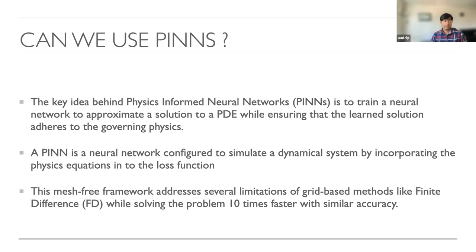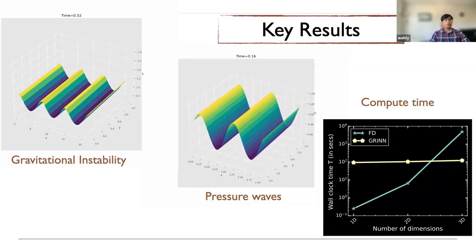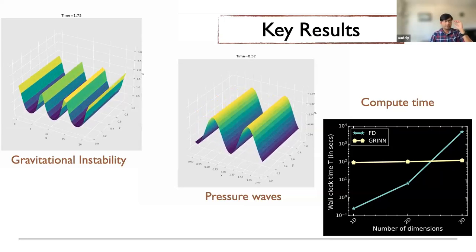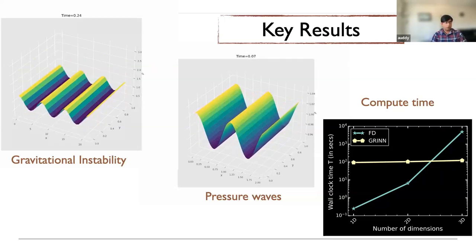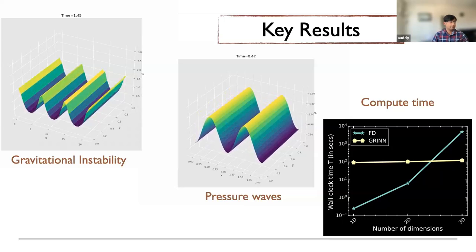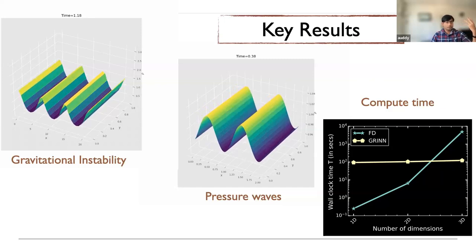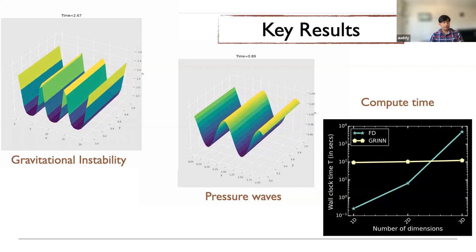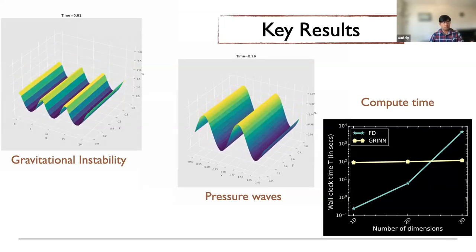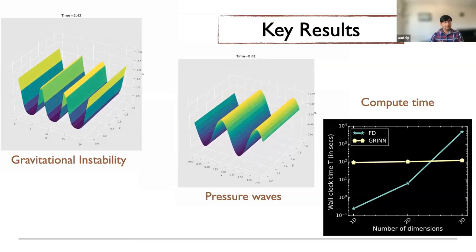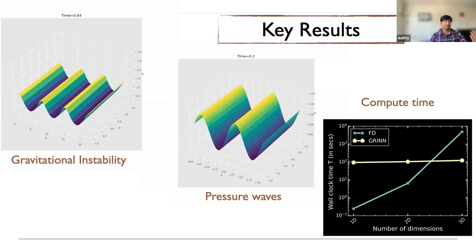Finally, PINNs are a mesh-free framework. Since finite difference has issues with mesh, particularly when going from 1D to 2D to 3D becoming computationally much more challenging, one motivation was to see if PINNs being meshless can address resolution and dimensionality issues. We tested this for a simplified 3D system with three equations and some initial conditions for which we have linear solutions — to compare how PINNs perform relative to linear theory and finite-difference solutions. We found that PINNs did a reasonable job: it captures gravitational instability and propagating pressure waves.